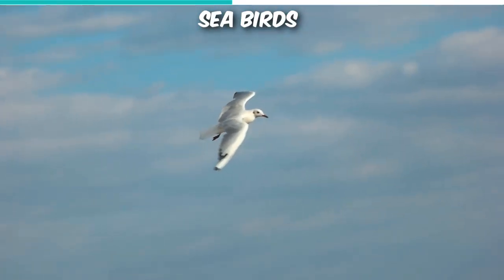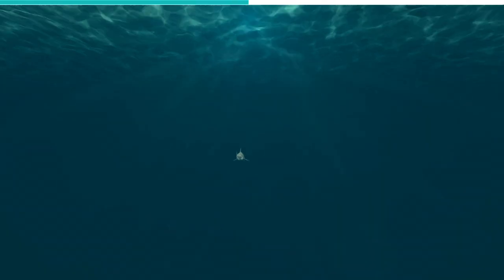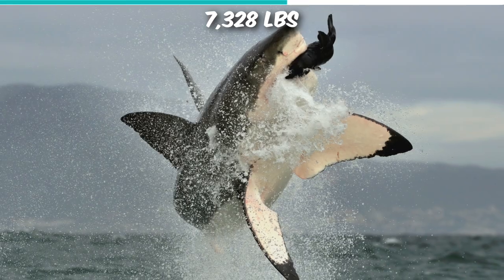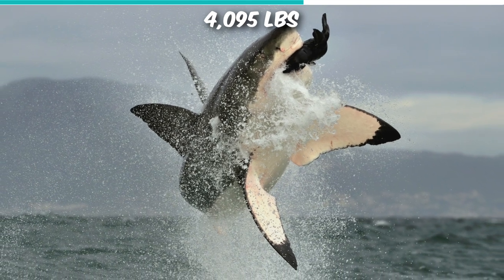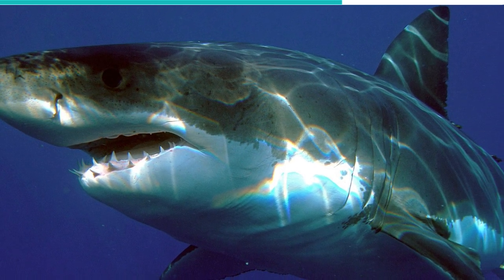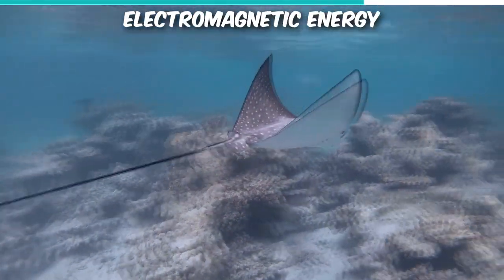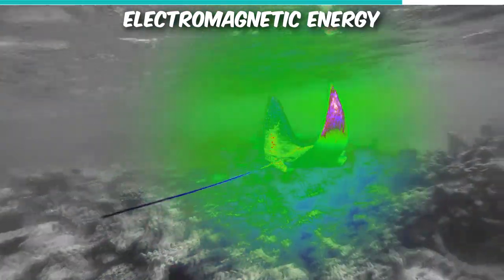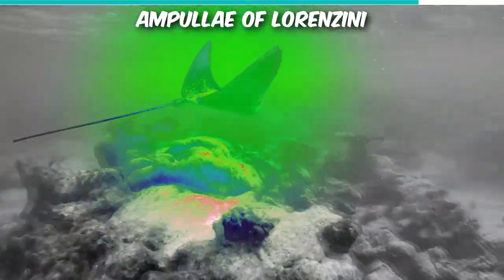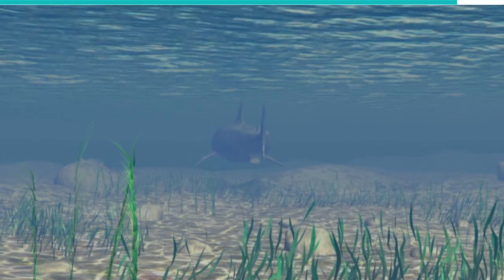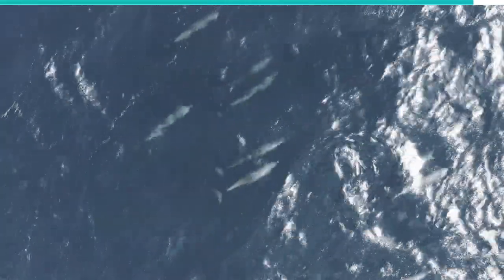Great White Sharks are very potent hunters and can exert a powerful bite force. Research in 2008 revealed that a shark weighing 7,328 pounds could exert 4,095 pounds of force. In addition to great vision and an amazing sense of smell, sharks have also evolved a whole new sense to help them find prey — the ability to detect electromagnetic energy from other animals, supported by a special organ known as the ampullae of Lorenzini. Their electromagnetic sensitivity is so refined that they can detect variations of half a billionth of a volt, and can even detect the heartbeat of nearby creatures.